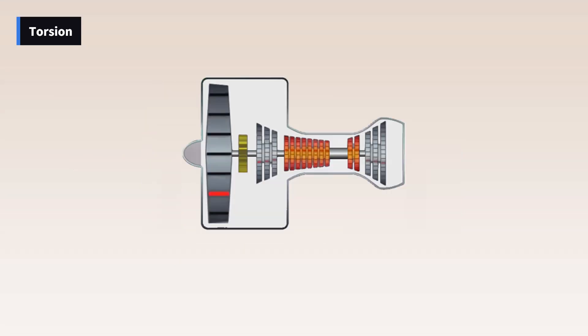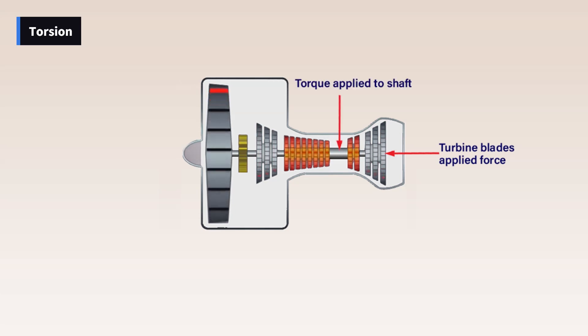The turbine shaft on a turbofan engine, which connects to the compressor in order to drive it, is under a torsion stress. The turbine blades extract energy from the high-velocity air as a force in pounds. This force in pounds acts along the length from the blades to the center of the shaft and creates the torque that causes rotation.